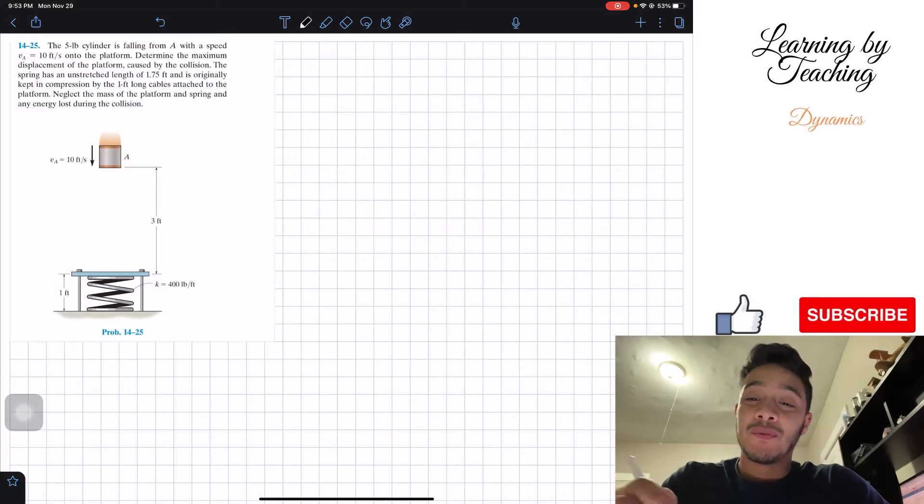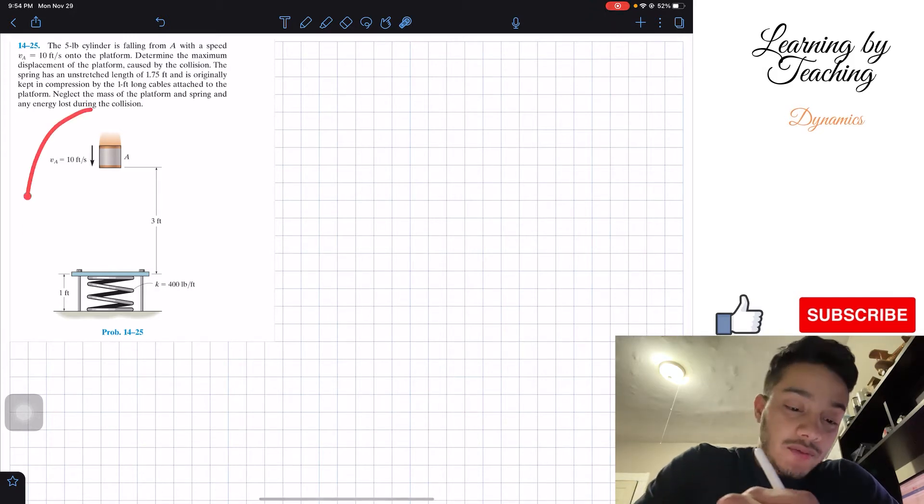Welcome back everyone to Learning by Teaching. Today we're in dynamics and we're going to solve problem 14.25. The five pound cylinder is falling from A with a speed VA equal to 10 feet per second onto the platform. Determine the maximum displacement of the platform caused by the collision. The spring has an unstretched length of 1.75 feet and is originally kept in compression by the one foot long cables attached to the platform. Neglect the mass of the platform and spring and any energy loss during the collision.